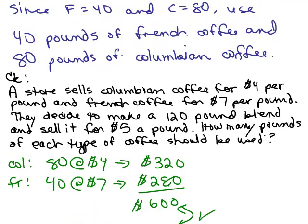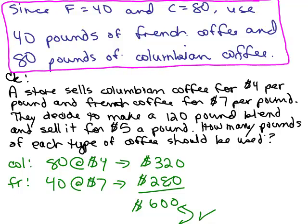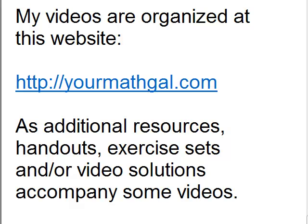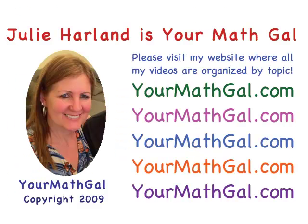So therefore, what we have up here was correct. We just want to use 40 pounds of the French coffee and 80 pounds of the Colombian coffee. Please visit my website at yourmathgal.com where you can view all of my videos which are organized by topic.